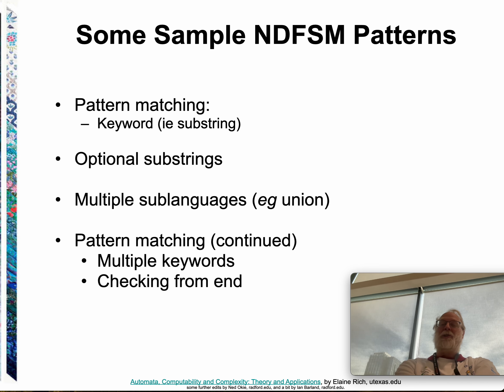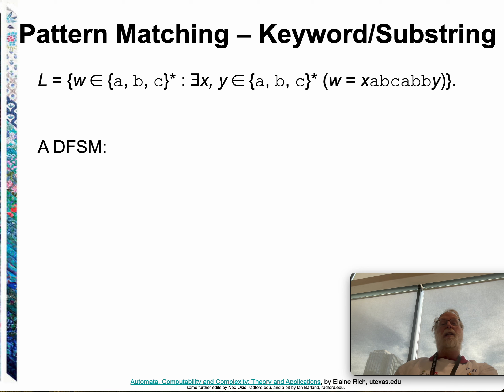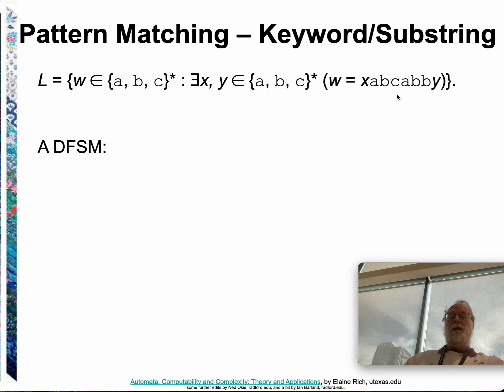What are non-deterministic machines good for? What problems can we solve with them? So we'll see some here. Pattern matching, optional substrings, multiple taking the union of sub languages. We've hinted at that already. And pattern matching with both multiple keywords and checking for the end of a string. So I want all strings. Look at this top definition for a second. Pause and make sure you understand that definition. It's the set of all strings containing A, B, C, A, B, B as a substring in the middle of it somewhere. Possibly at the beginning if X was the empty string because X is in A, B, C, star. That includes the empty string.